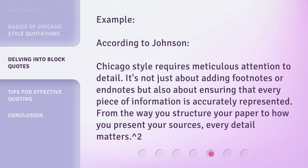Example. According to Johnson: "Chicago style requires meticulous attention to detail. It's not just about adding footnotes or endnotes, but also about ensuring that every piece of information is accurately represented. From the way you structure your paper to how you present your sources, every detail matters." [footnote 2]